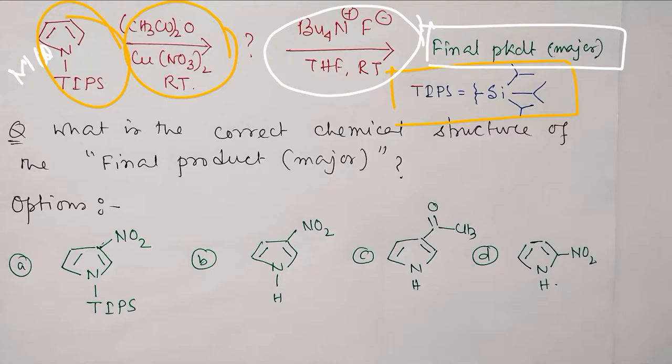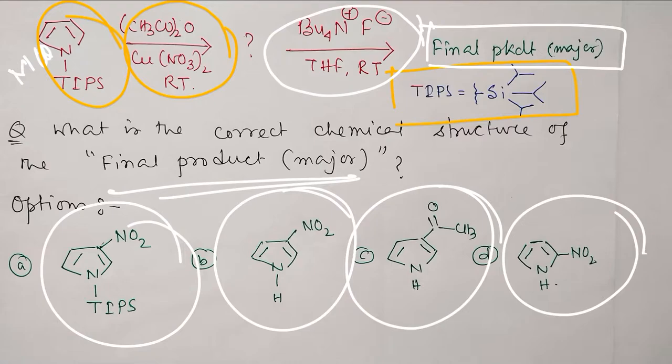One final product is produced. Now you have to find out what is the correct chemical structure of the final major product. Four options are provided; you have to find the right answer.